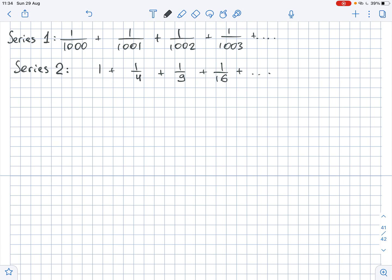Well, here we need to talk about the direct comparison test. The direct comparison test states that if 0 is less than an, which is less than or equal to bn for all n - this is super important, for all n - then we know that if the series of bn converges, then an also converges. If an diverges, then bn also diverges.